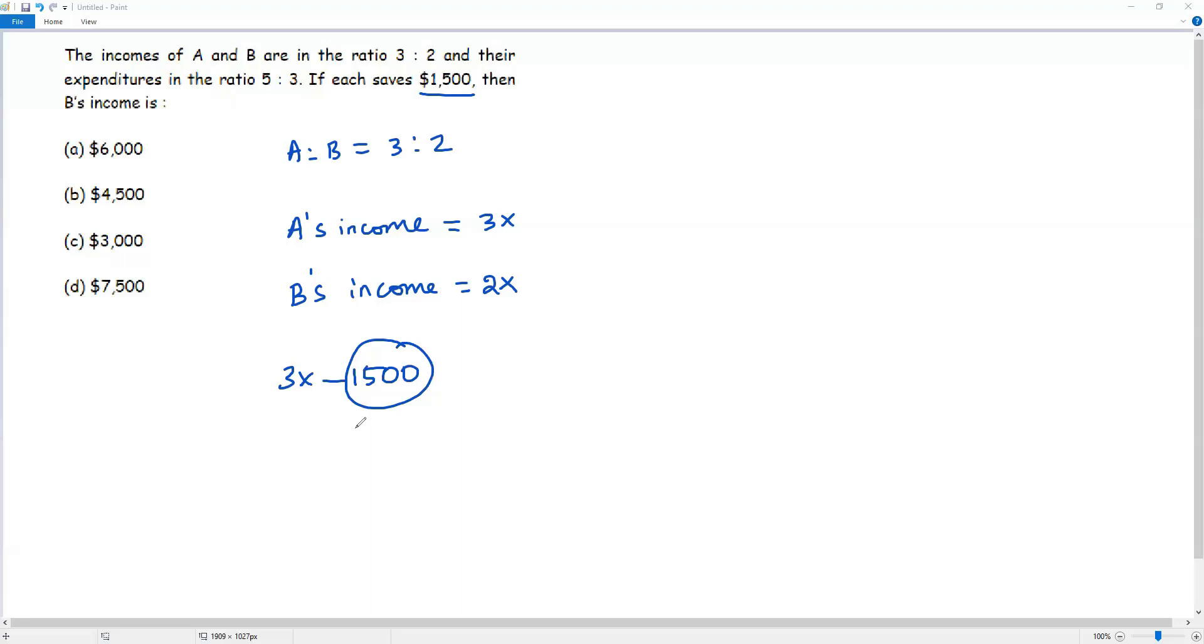If I subtract savings from income, that will give you the expenditure. This is expenditure of A. The same way I can find the expenditure of B. I already know the income of B, that is 2x. From the income of B, I subtract B's savings, that is $1500. So it gives me the expenditure of B. Now I know the expenditure of A and the expenditure of B.